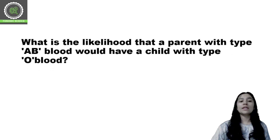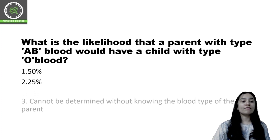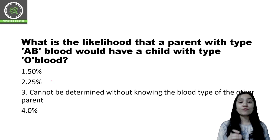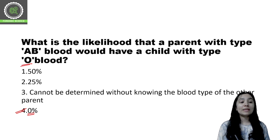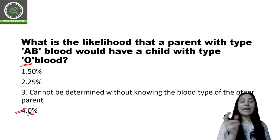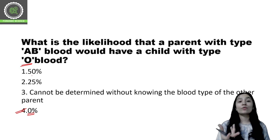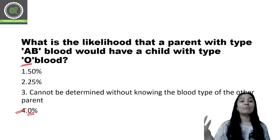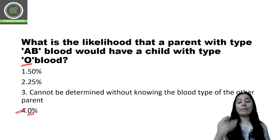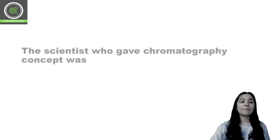Question number 8: What is the likelihood that a parent with type AB blood would have a child with type O blood group? The correct option is option 4 — 0%. When parents have an AB blood group, the child cannot have O blood group. The child can be A, B, or AB, but not O, because both A and B antigens are present in the parents. Following Mendelian inheritance, there is a 0% chance of an O blood group child.